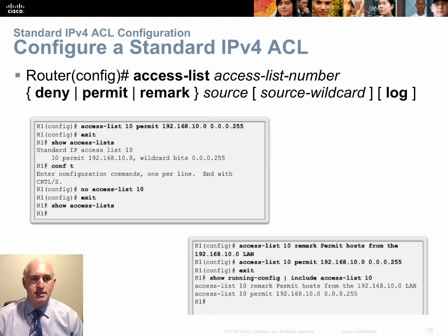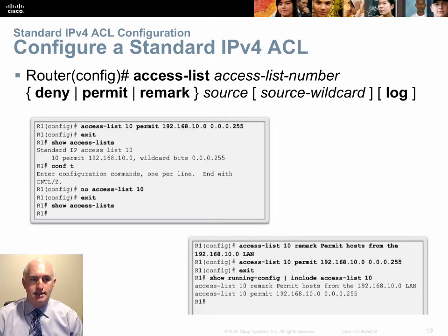Configuring a standard numbered ACL: numbers 1 to 99 indicate it's going to be a standard ACL. To get rid of the access list, just type 'no access-list 10' and it will dump the entire list, all statements included.